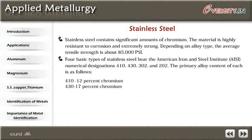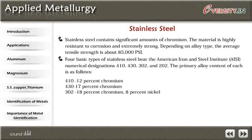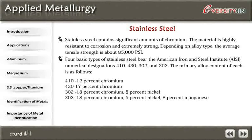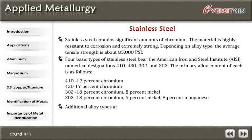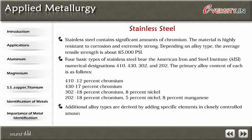430: 17% chromium. 302: 18% chromium, 8% nickel. 202: 18% chromium, 5% nickel, 8% manganese. Additional alloy types are derived by adding specific elements in closely controlled amounts.